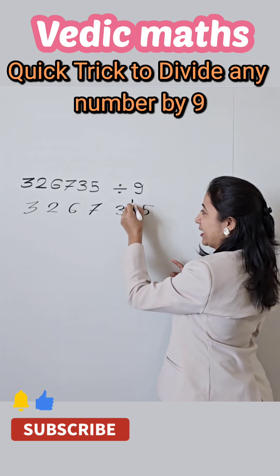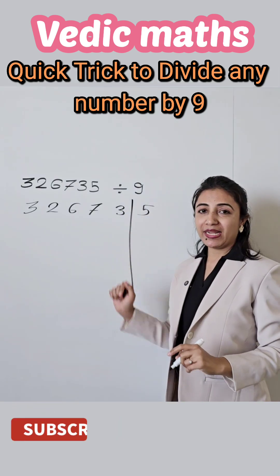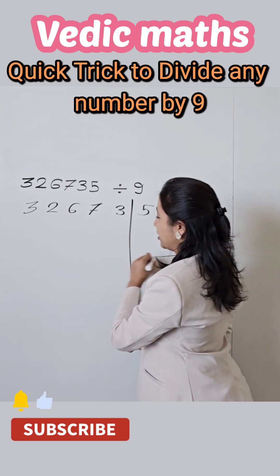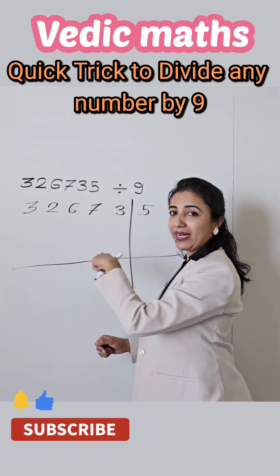Break the number into two parts. Here the last number as a remainder and remaining part of the number as a quotient. And just you have to add the number into the next number.